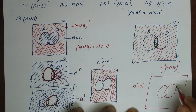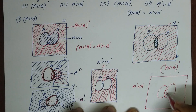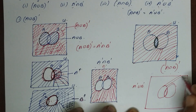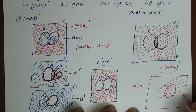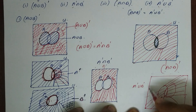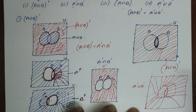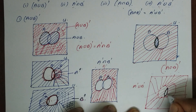The other portion — A complement union B complement — gives the same shaded region as A intersection B the whole complement. This confirms De Morgan's second law. I'll see you next time.